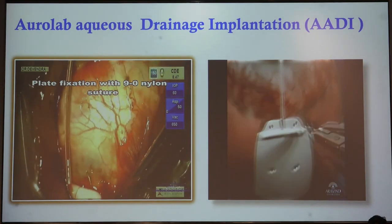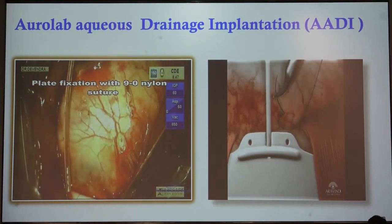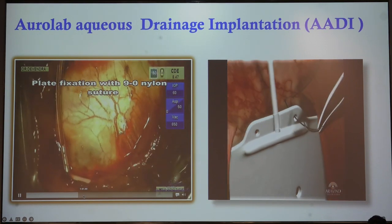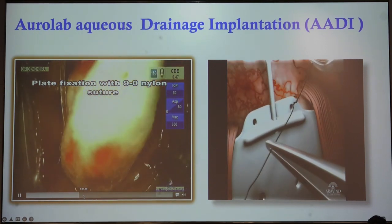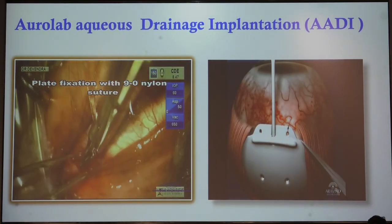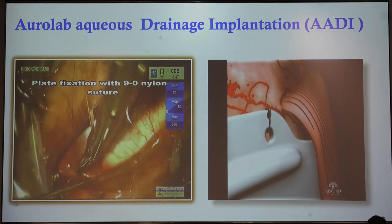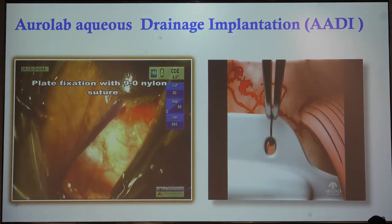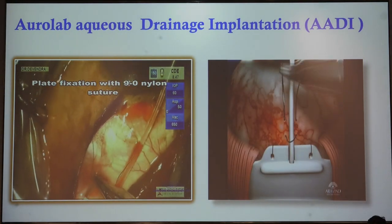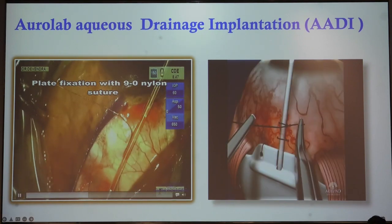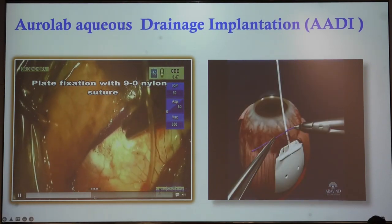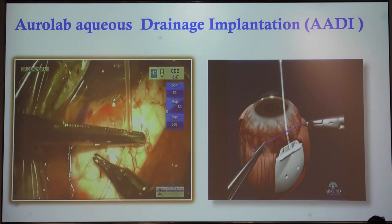The plate has to be secured using 9-0 nylon suture — two 9-0 nylon sutures. Take the first sclerotomy bite first, then come through the hole in the RD plate. The knot automatically goes inside, so there is no need to struggle with burying the knot. You can then cut the knot.